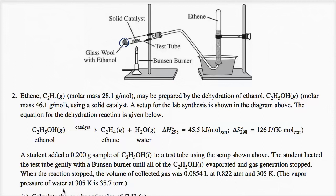The vapor pressure of water at 305 Kelvin is 35.7 torr. In the presence of the catalyst, the ethanol undergoes a dehydration reaction, producing ethene and water. The ethene is captured as a gas at the top of the collection tube. The water is also produced as vapor, but once cooled down, liquid water forms as well.